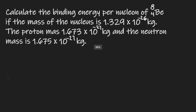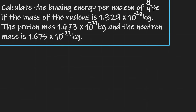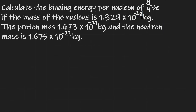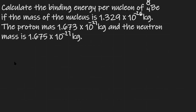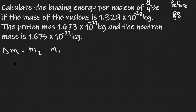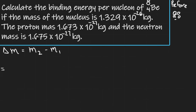Binding energy per nucleon example: calculate the binding energy per nucleon of beryllium-8-4. The mass of the nucleus is 1.329 times 10 to the minus 26 kilograms, and proton and neutron masses are given. First, we find the mass defect: delta m equals the mass of all separated nuclei minus the mass of the nucleus. Beryllium-8-4 has 4 protons and 4 neutrons — 8 nucleons total.